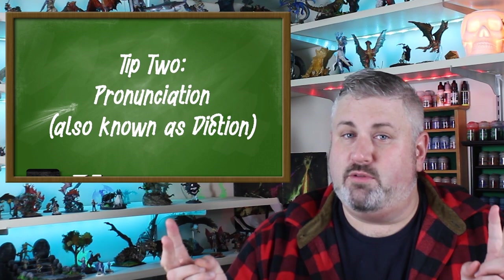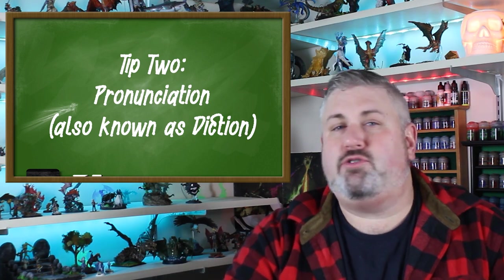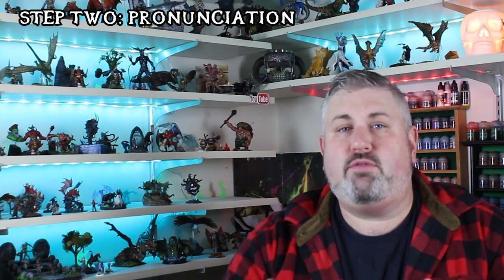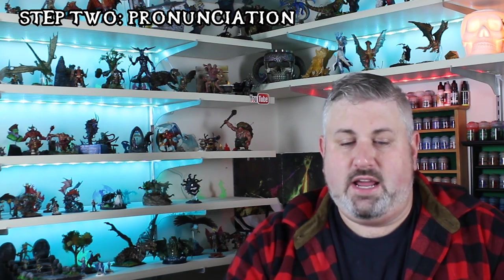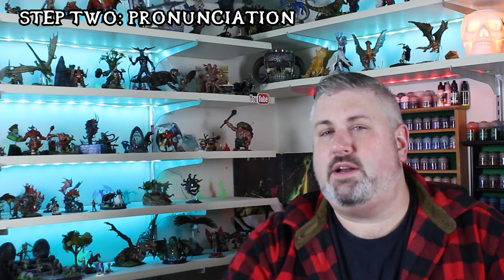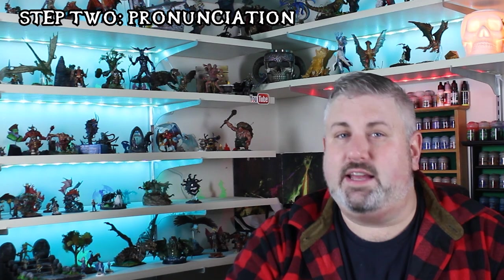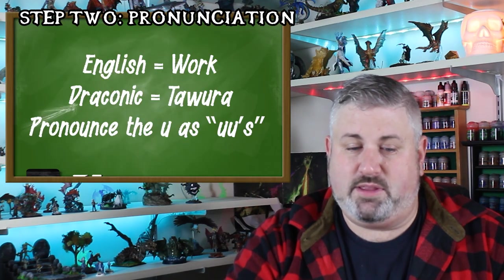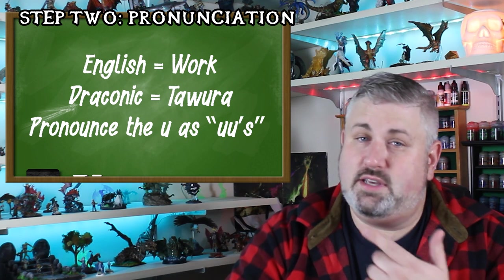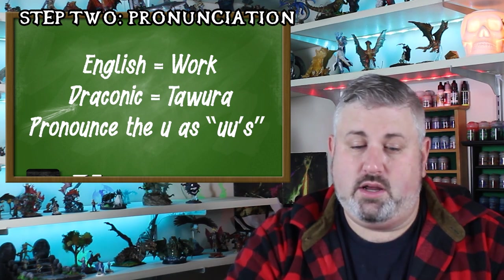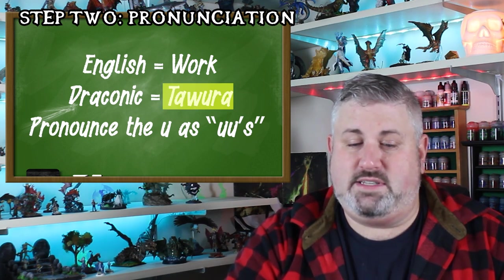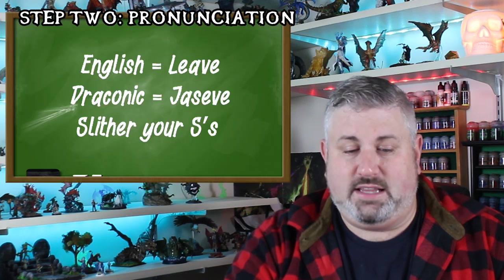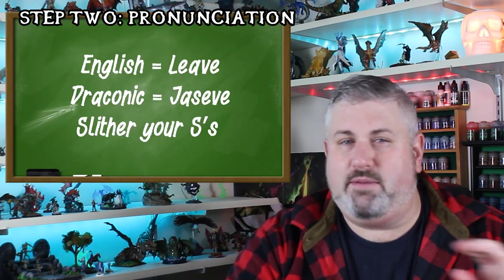Tip number two: pronunciation. Make the draconic your own, but remember, keep it consistent. Read through the output of the translator and identify pronunciations you think sound right and can consistently rely upon yourself to say. For example, some U combinations work — I would say 'ta rua.' And S's, like a snake, I kind of blend them together.